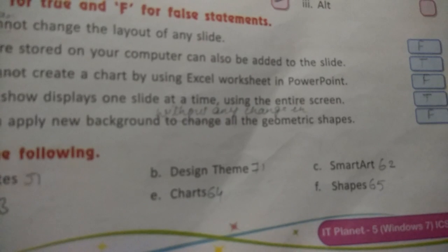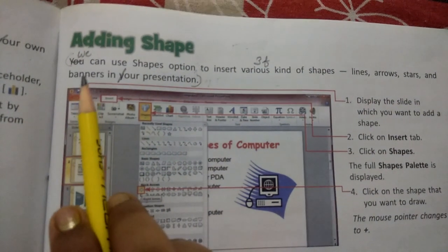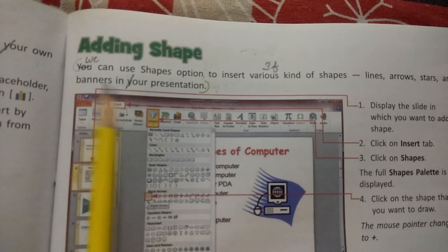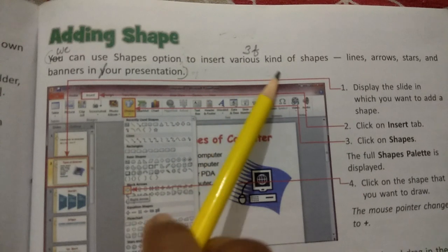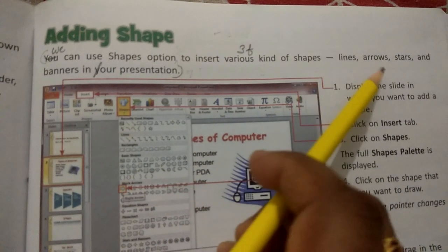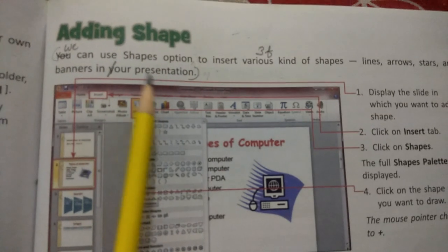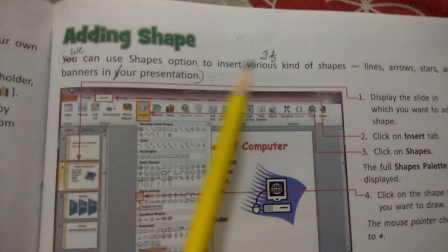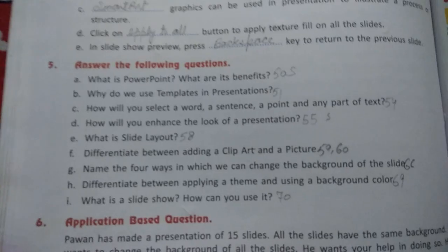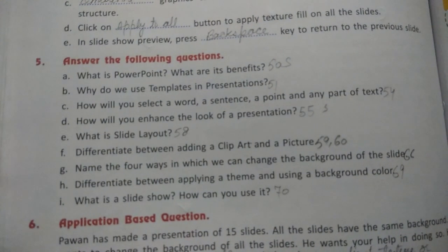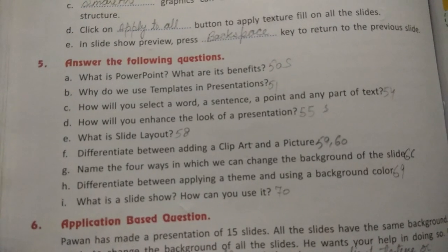For F answer, take out page number 65. We can use shapes option to insert various kinds of shapes, line, arrows, stars, and banners in our presentation. This is the answer 3F. Now the exercise number five, answer the following questions, we will cover in the next video. Thank you.